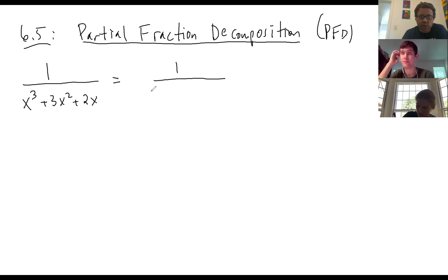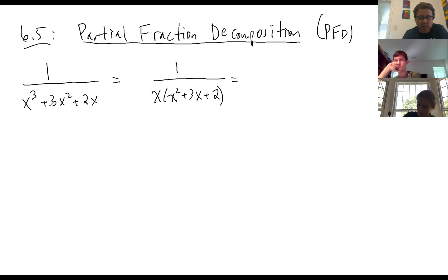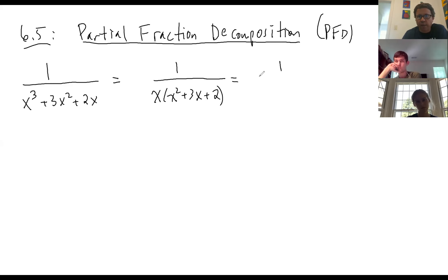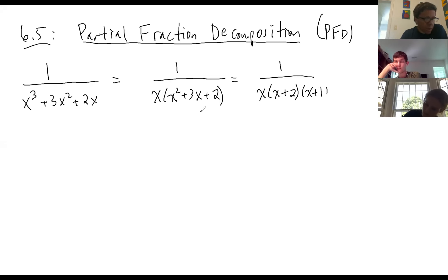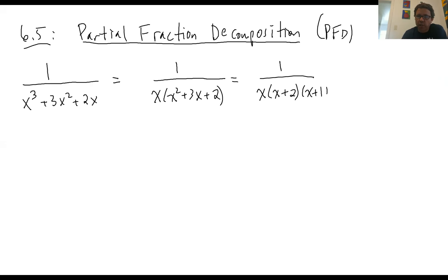You realize this factors as x times (x² + 3x + 2), because they all have x's in them so you can factor out an x. Then x² + 3x + 2 factors as (x + 2)(x + 1). So multiplying back out, that works. Now going into the decomposition: anytime you have terms that are just one power — x to the 1, x to the 1, x to the 1 — these are called monomials, and each gets its own fraction. So you get something over x, something over x + 2, and something over x + 1.